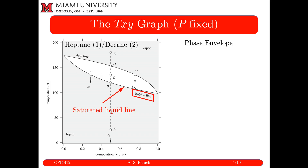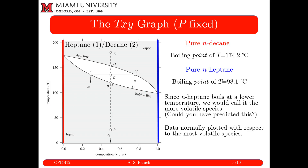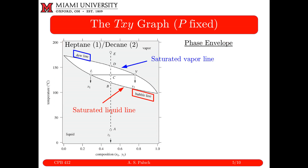The bottom line of the phase envelope gets the special name 'bubble line.' The name comes from the fact that if I start with a liquid mixture and heat it up, where I hit my bubble line is the point at which my first vapor bubble forms in that liquid. The line on top corresponds to my 'dew line.' If I start with a vapor mixture and decrease the temperature, where I hit my dew line is where my first drop of liquid forms — like dew on a fall day.